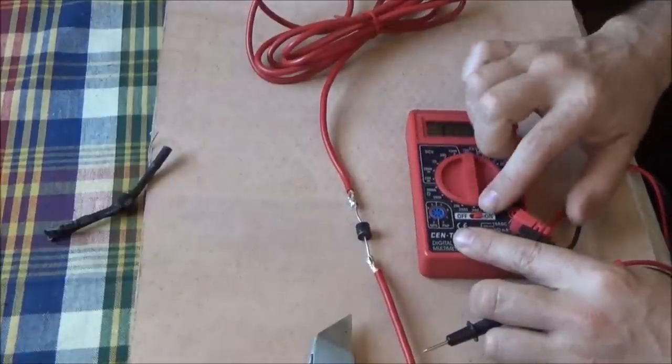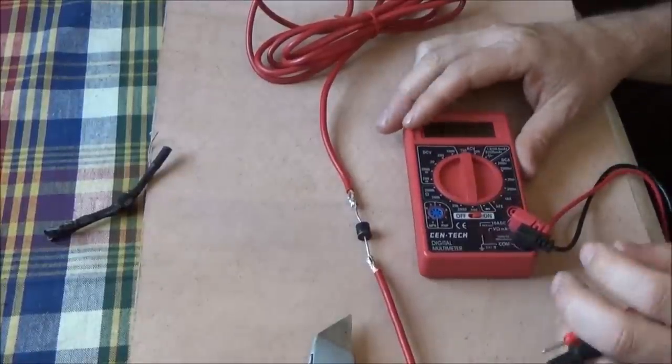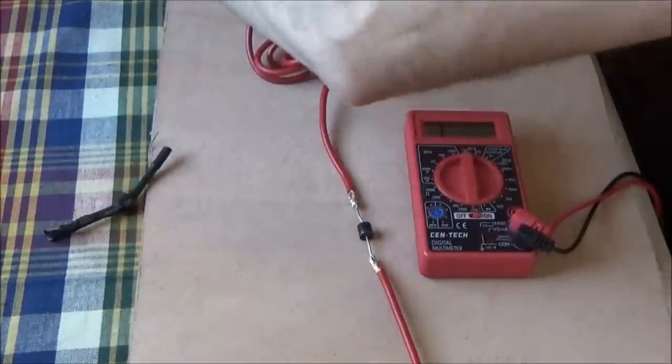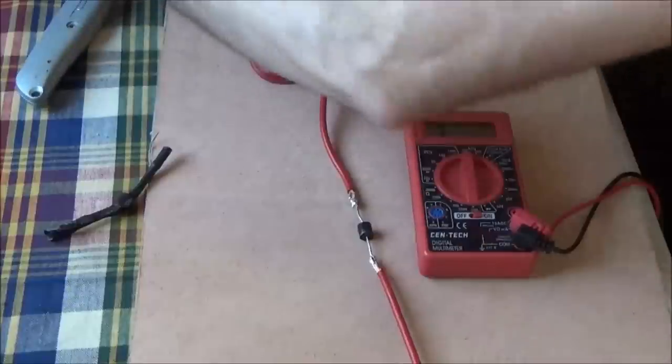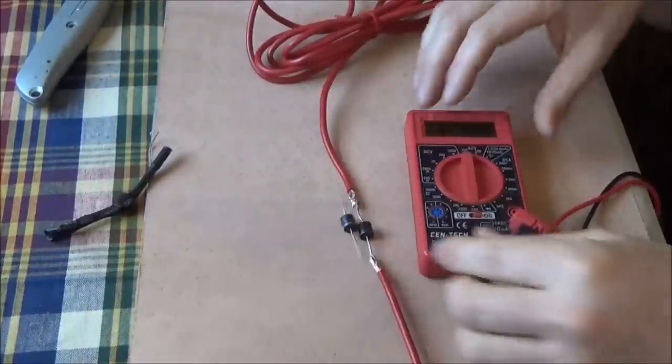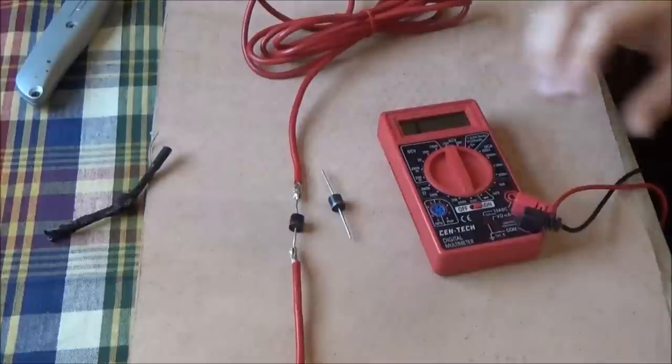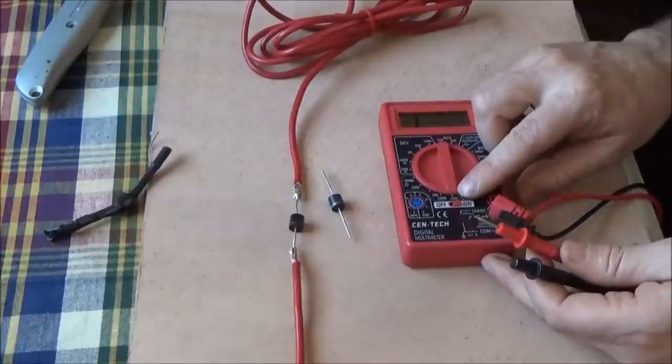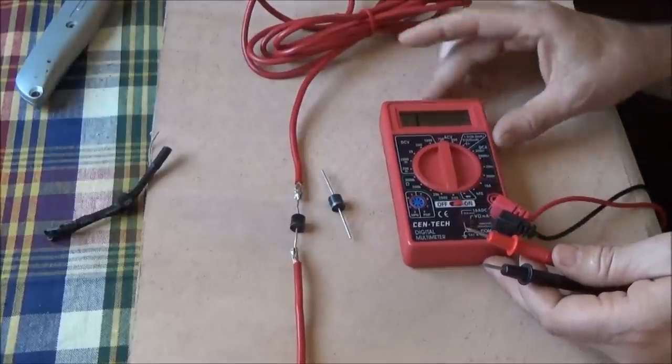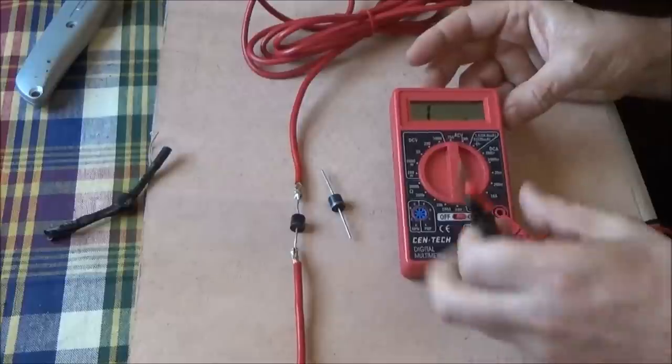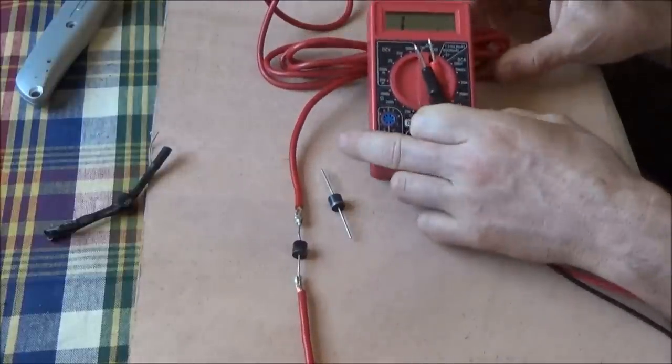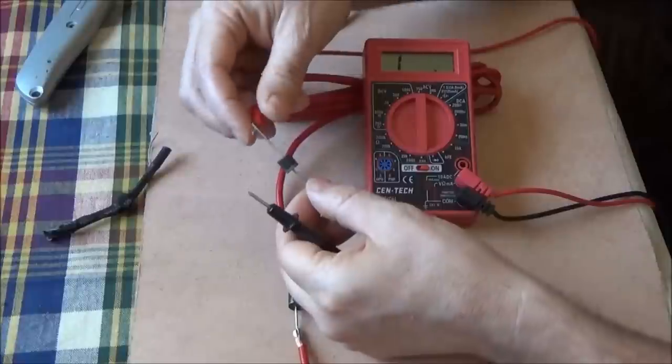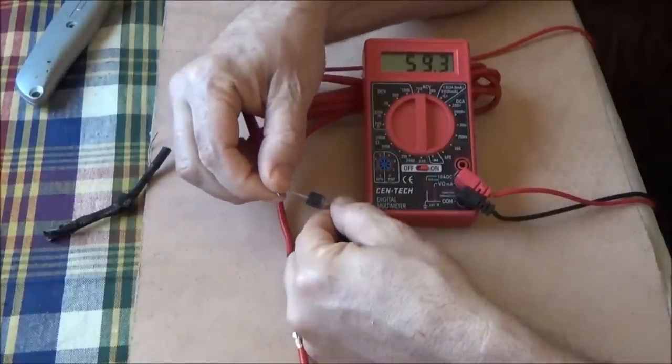I'm going to set this on ohms now. On a good diode, let's take for comparison a solar panel blocking diode I just purchased. Let's see what we have here. I have this set on ohms, 200 setting. Let's see if we can prop this up. What we should have on a diode is it should conduct one way and not another.